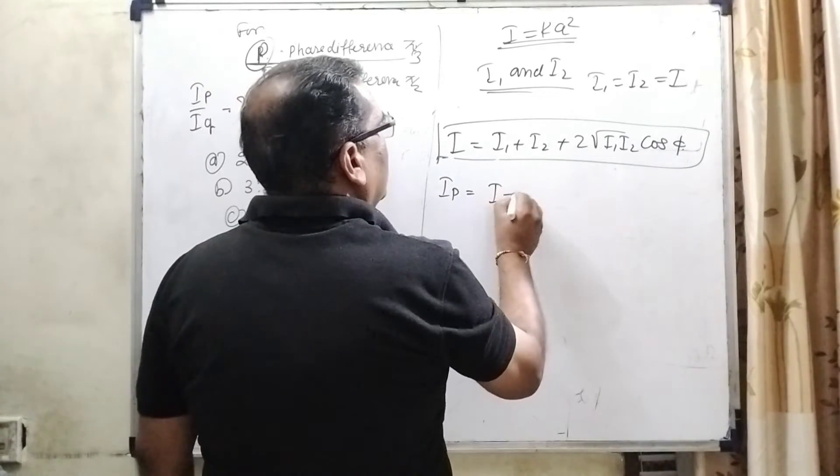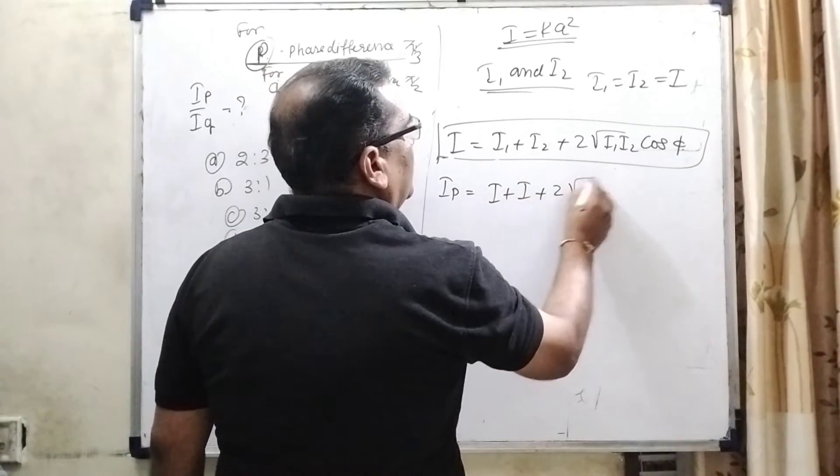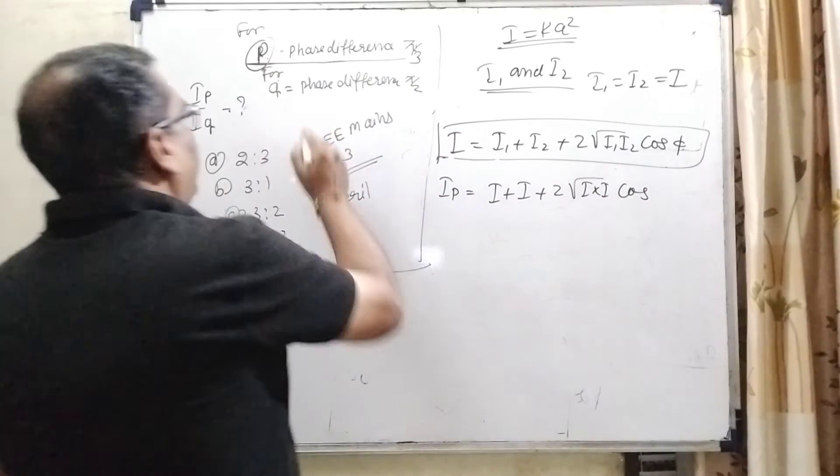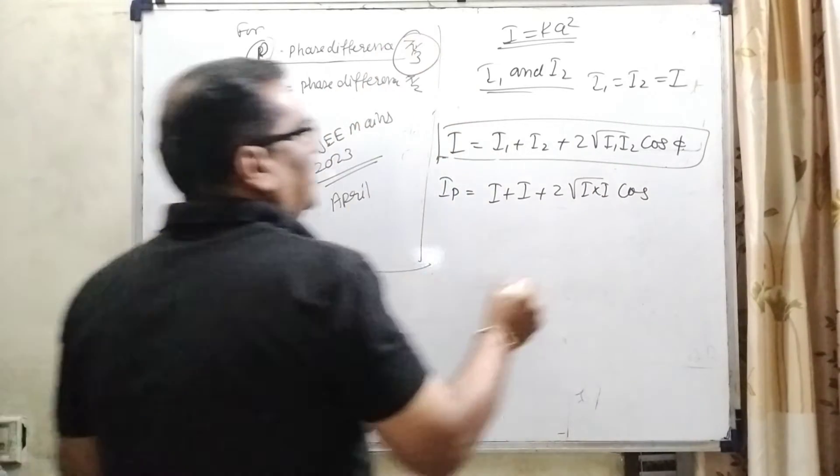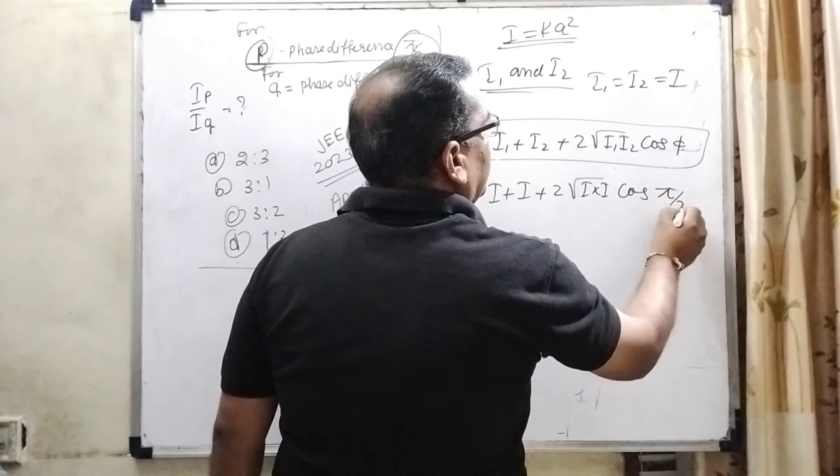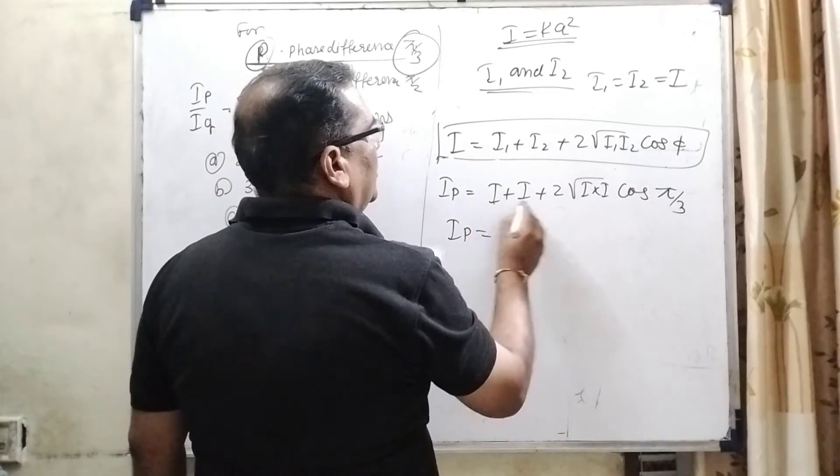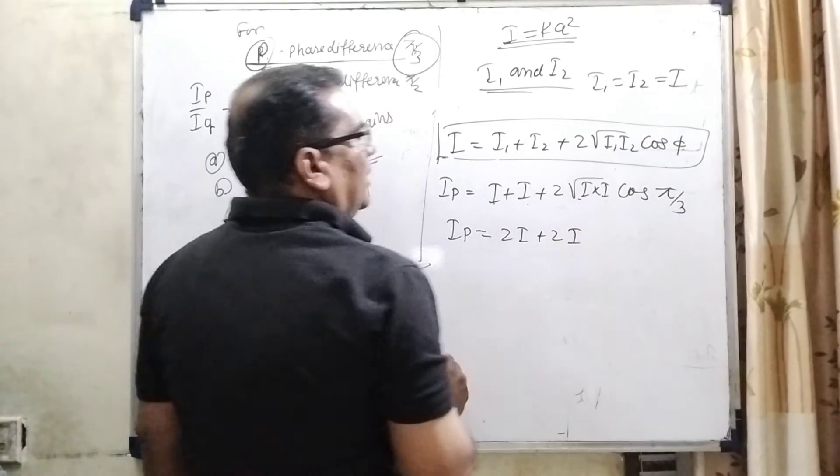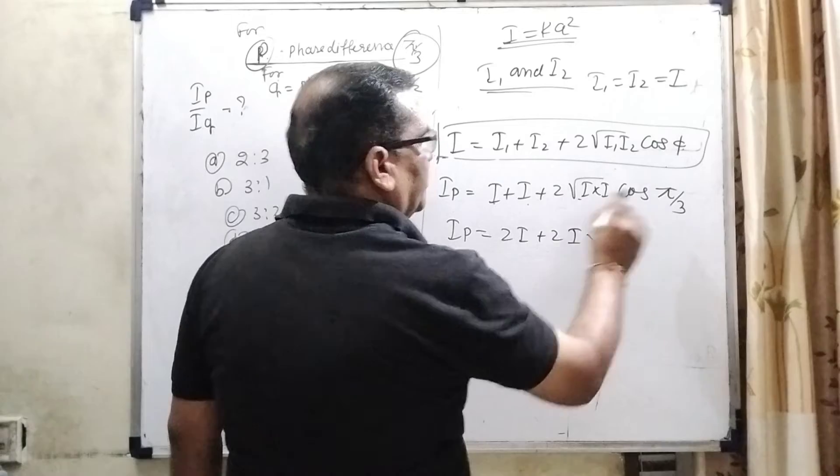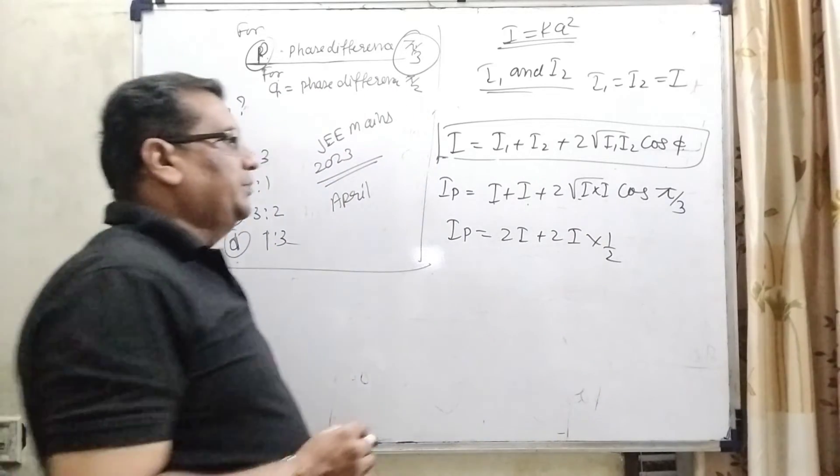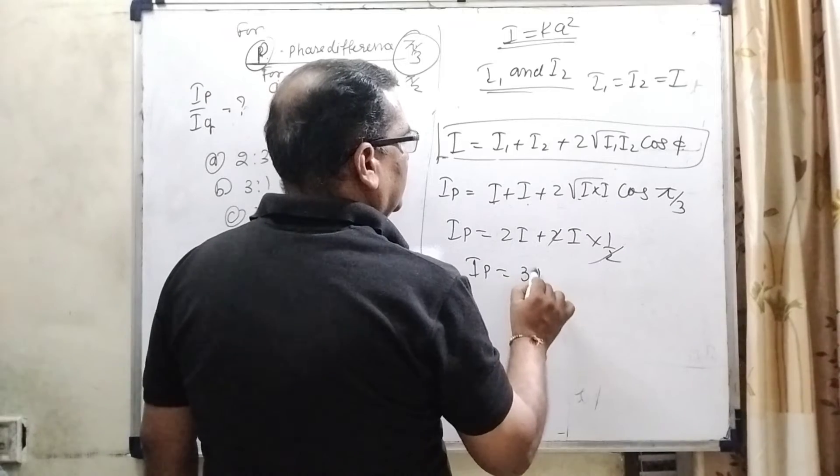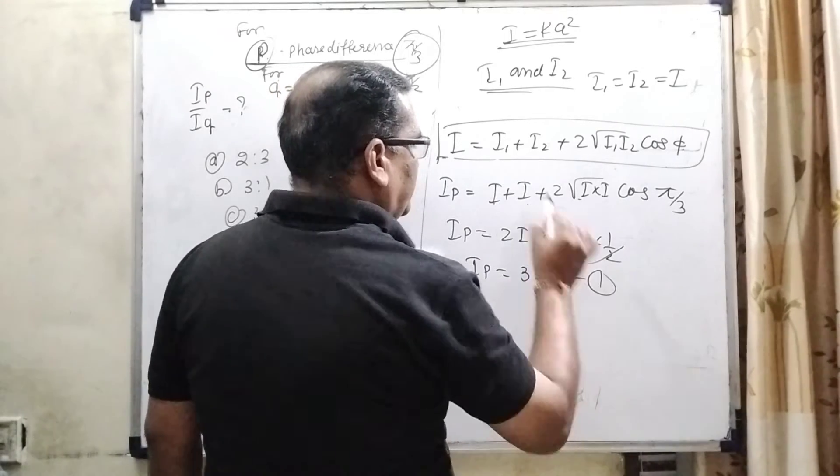So here I plus I plus 2 root I into I cos. For IP, the phase angle given is π by 3. π by 3 means 60 degree. So here IP equal to 2I. Here again 2I and cos 60 is 1 by 2. So here IP is equal to 3I.